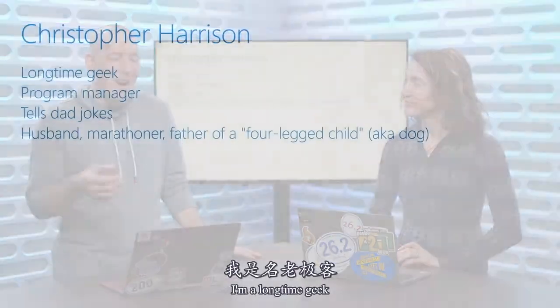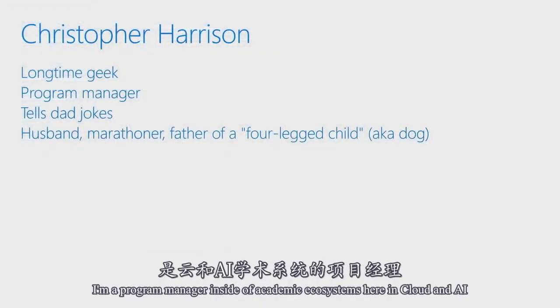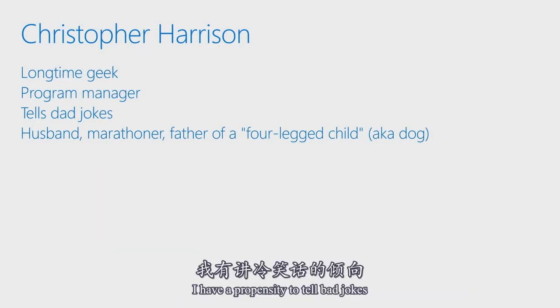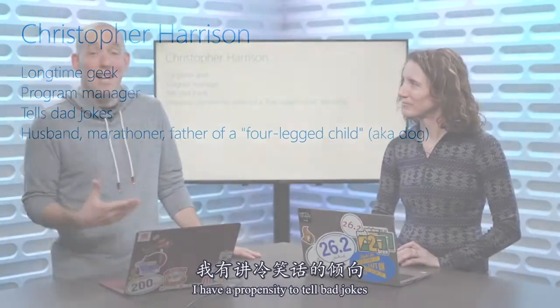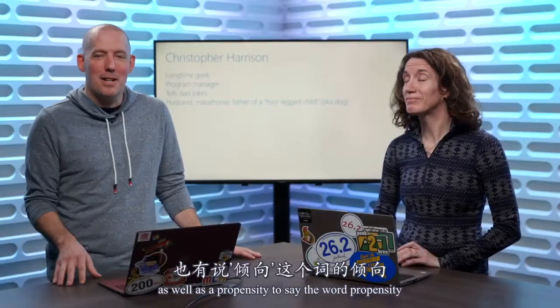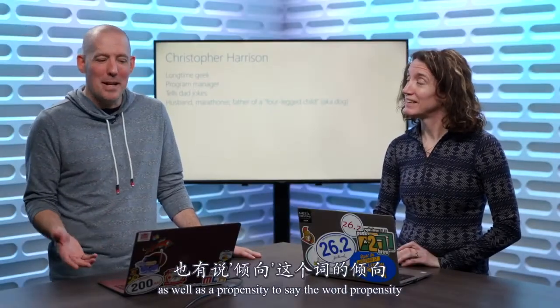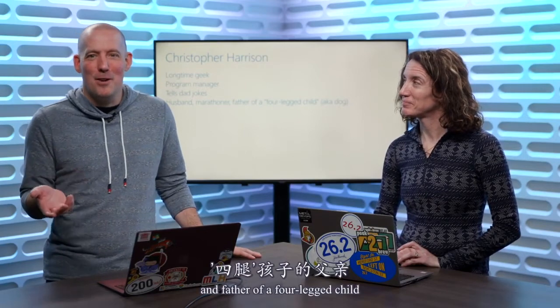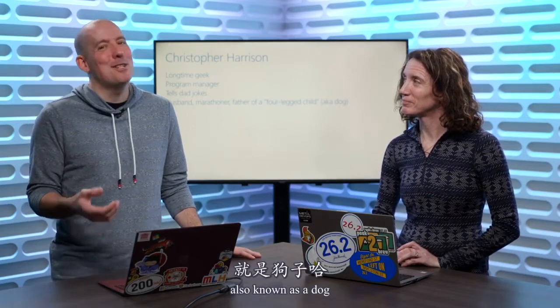And I'm Christopher Harrison. I'm a longtime geek and a program manager inside of academic ecosystems here in Cloud and AI. I have a propensity to tell dad jokes, as well as a propensity to say the word propensity. I'm a husband, marathoner, and father of a four-legged child, also known as a dog.